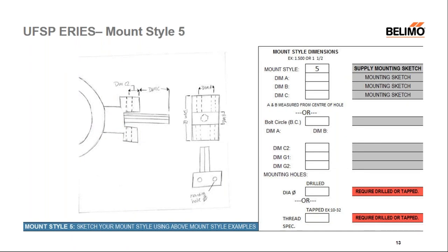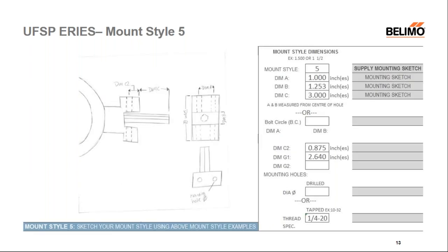Mount style five is used when a customer's valve does not match any of the existing mount styles. A sketch of the valve is created using the dimensions on the form as a guide, and the dimensions are filled in as called out on the drawing.